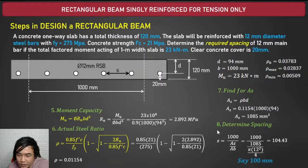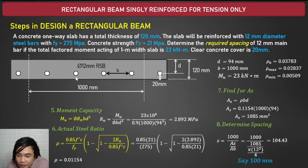We use 75% of ρb as ρmax to ensure the beam remains under-reinforced. This way, if the structure fails, the steel will yield first before the concrete cracks, providing a warning to occupants.